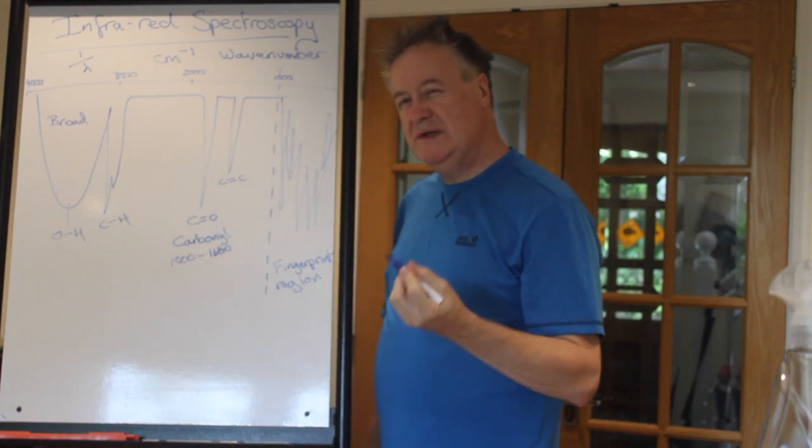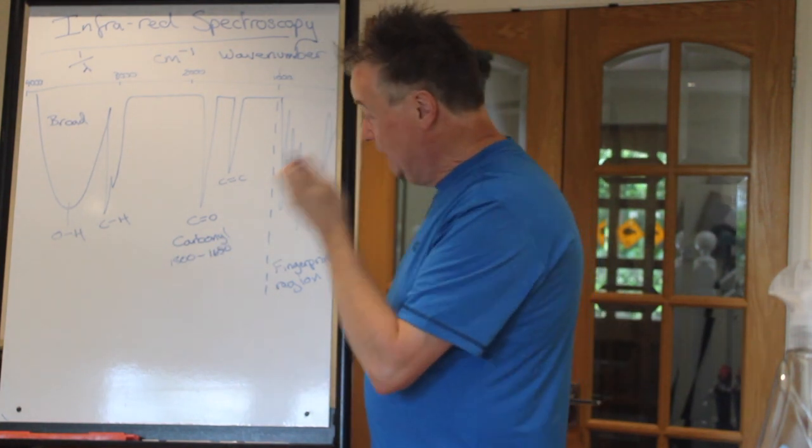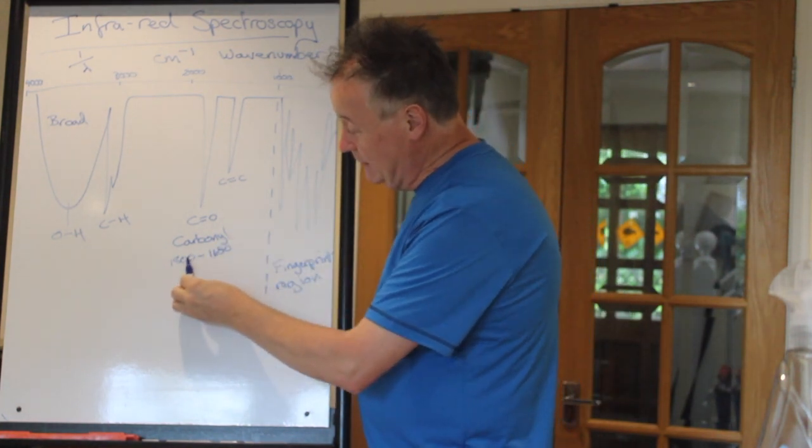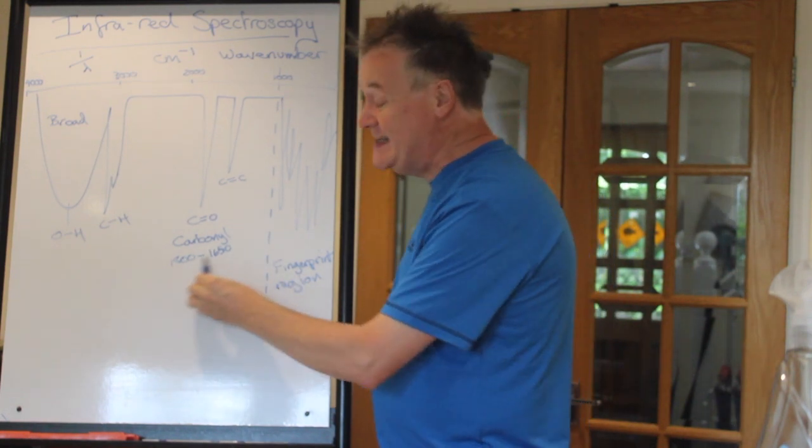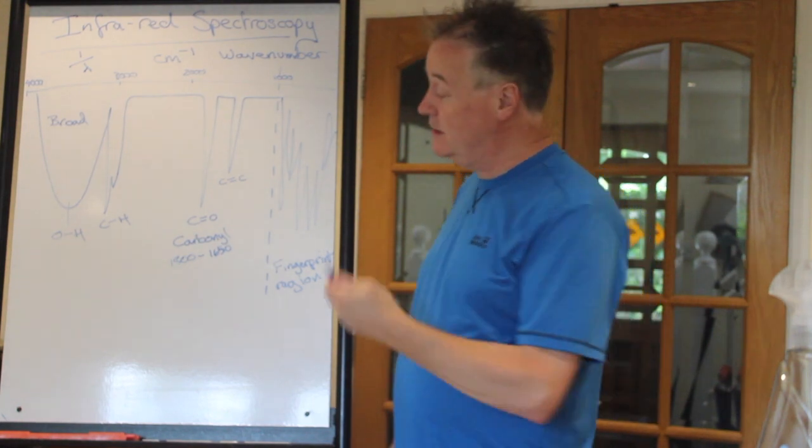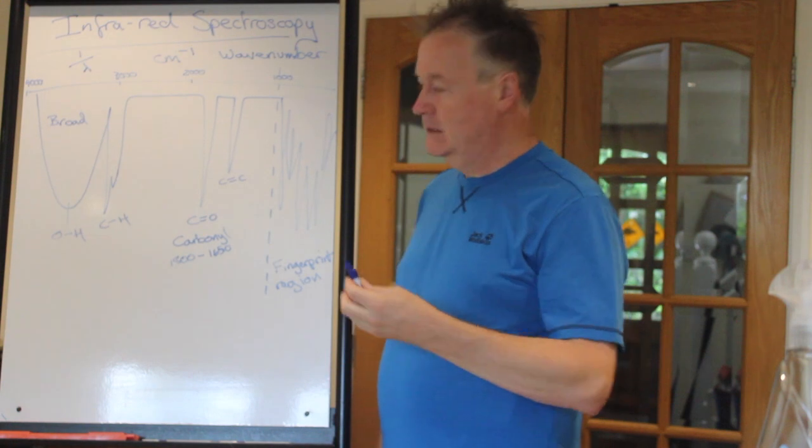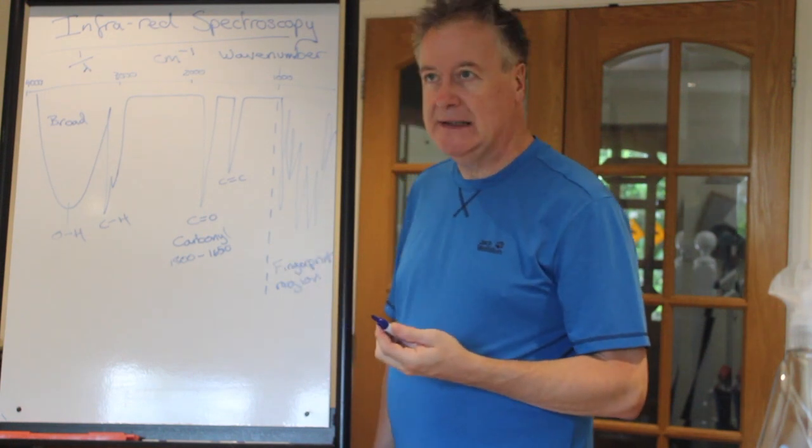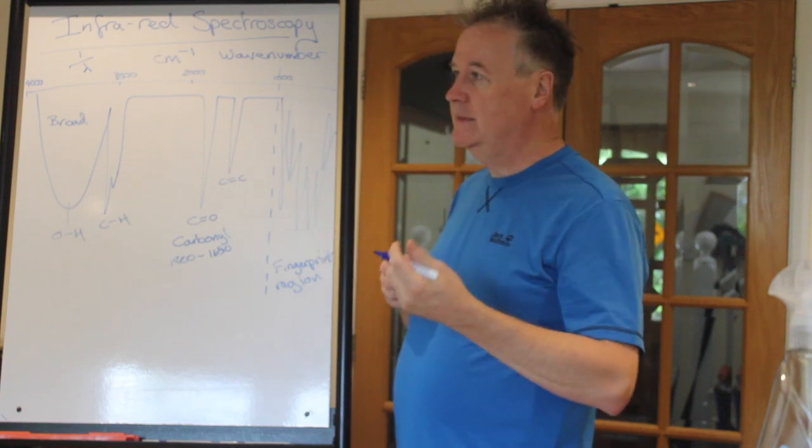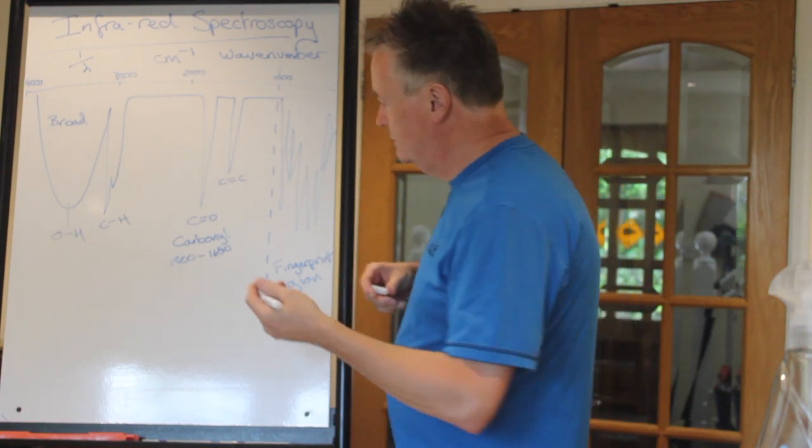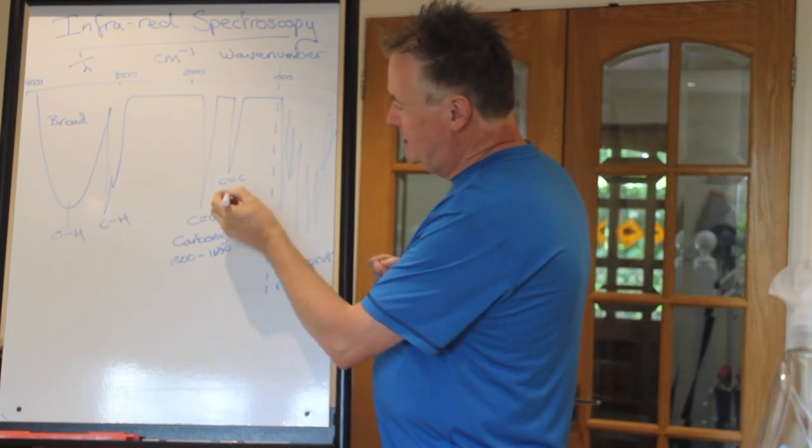Carbonyl absorption is really helpful. Because when it's in that region as a carbonyl, where it is in that region tells you what type of carbonyl it is. That's why it's really helpful. So if it's at a certain value it means it's an acyl chloride. If it's another value it means it's a ketone. If it's a slightly different value it might mean it's an ester which is another functional group that has a carbonyl in. This here is about 1600.